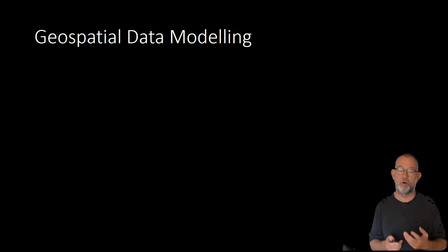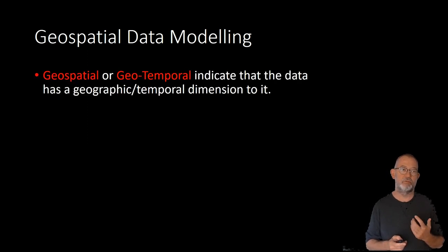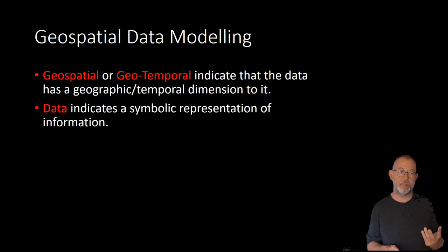First of all, let's talk about what is geospatial data modeling. If we look at the first word, we will talk about geospatial or geotemporal. It will indicate that our dataset has geographic coordinates or references to locations in it. If we talk about geotemporal, we indicate that our data not only references location, but also references time. If we look at the concept of data, let's just think of it now as data being a symbolic representation of information. And finally, if we look at the word modeling, modeling is probably the world's most misused word. And here I will use not less than four different types of modeling.